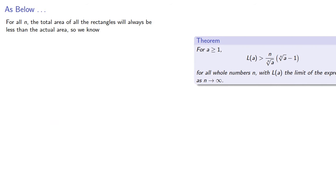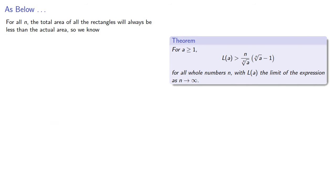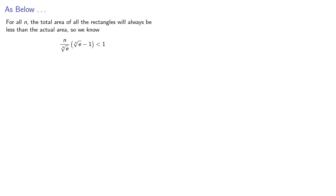Now for all n, the total area of all the rectangles will always be less than the actual area. So we have our inequality. And we can do a little bit of algebra. And this gives us an upper bound for e.